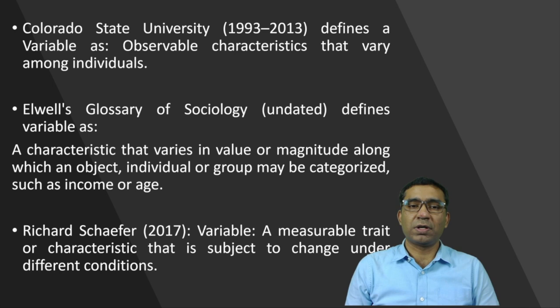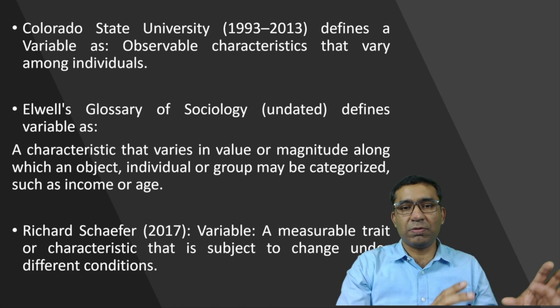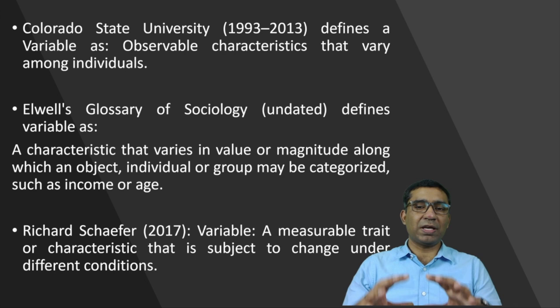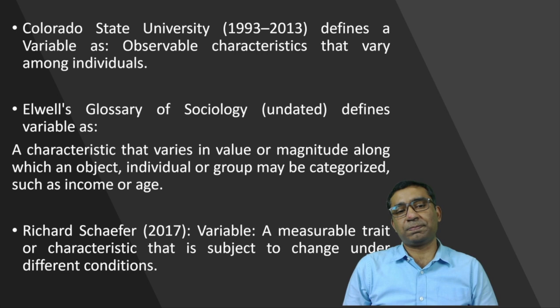Some definitions of variable: a variable is an observable characteristic that varies among individuals. Another definition: a characteristic that varies in value or magnitude along which an object, individual or group may be categorized — such as age or income. Another definition: a measurable trait or characteristic that is subject to change under different conditions. In simple terms, variables are outcomes or parameters we are interested to estimate — we want to figure out their values under given conditions.